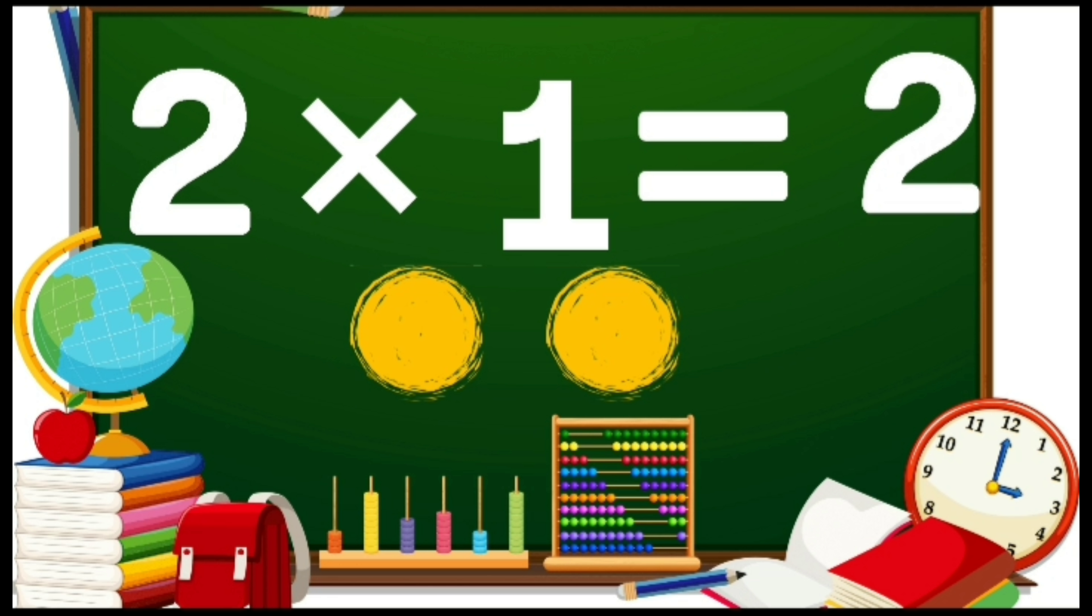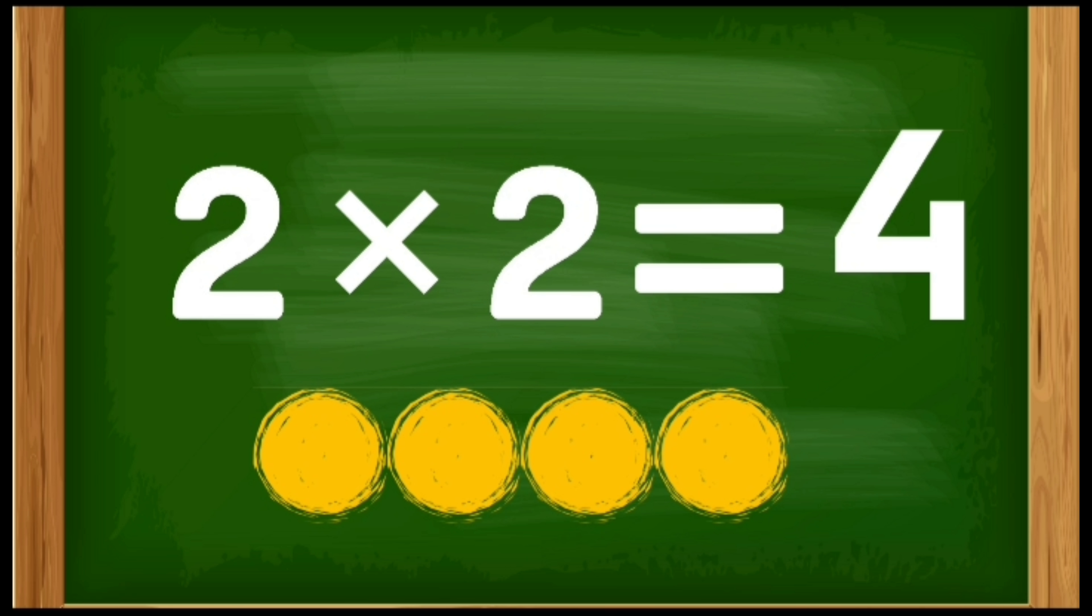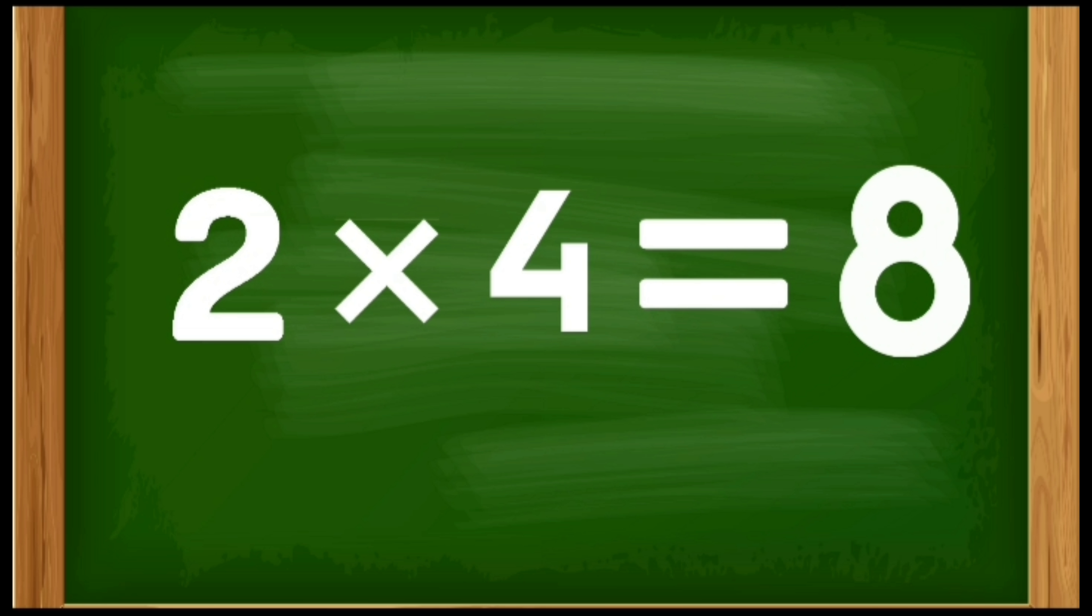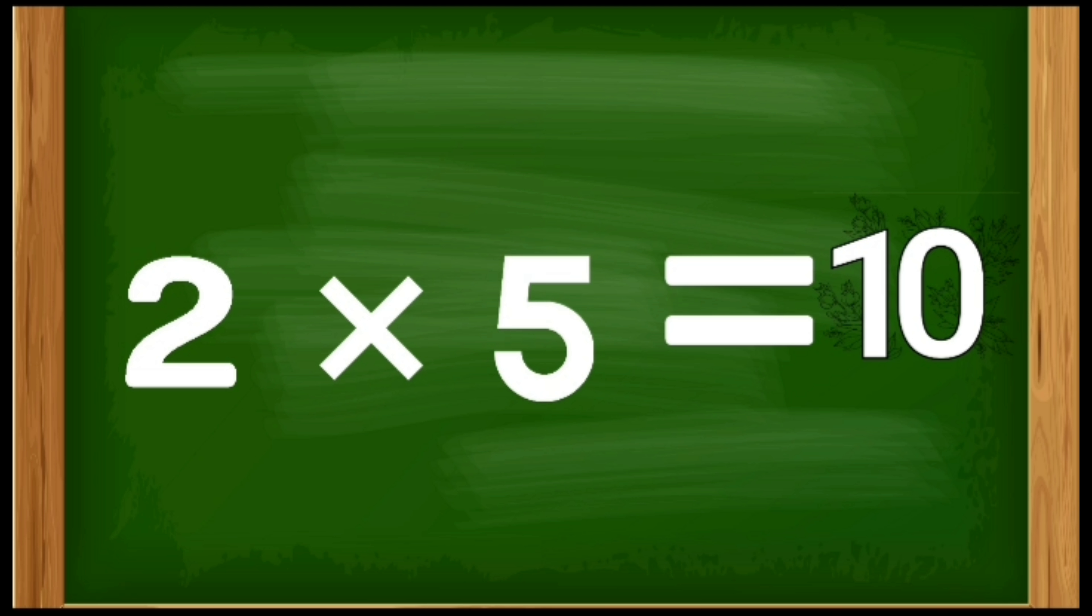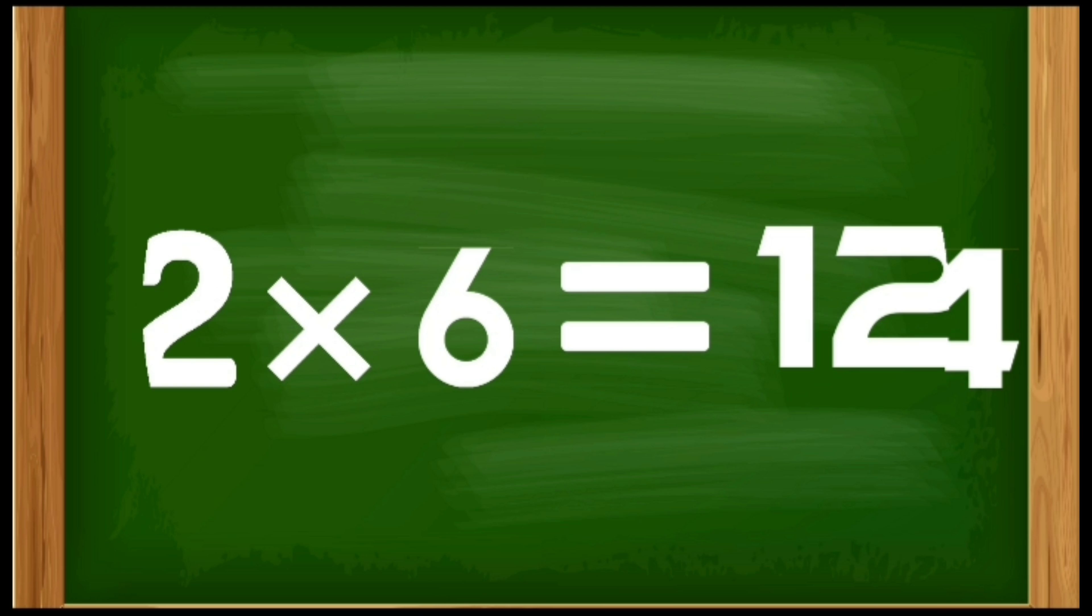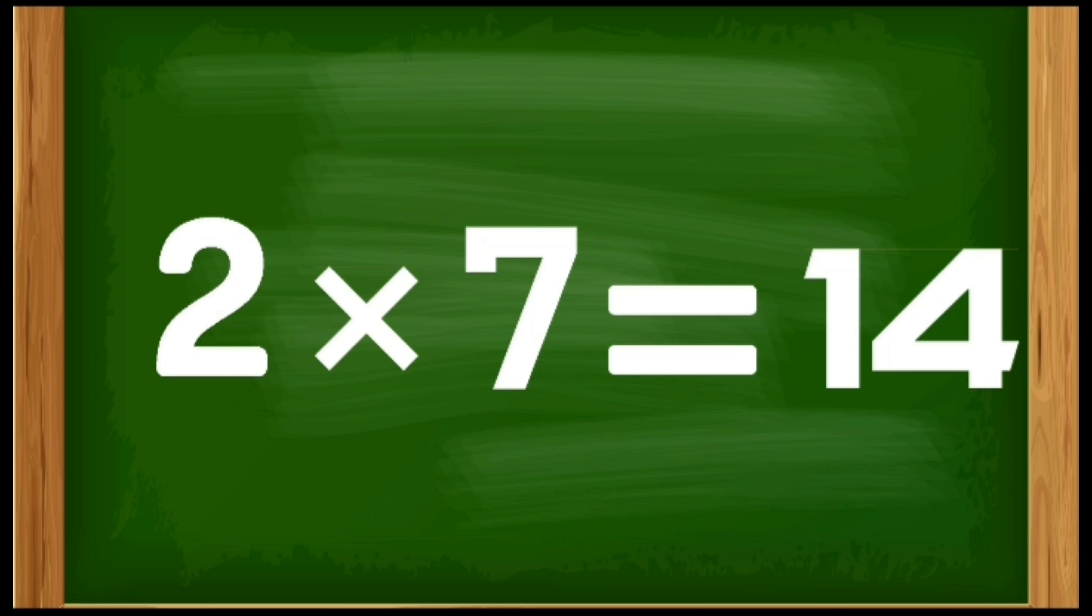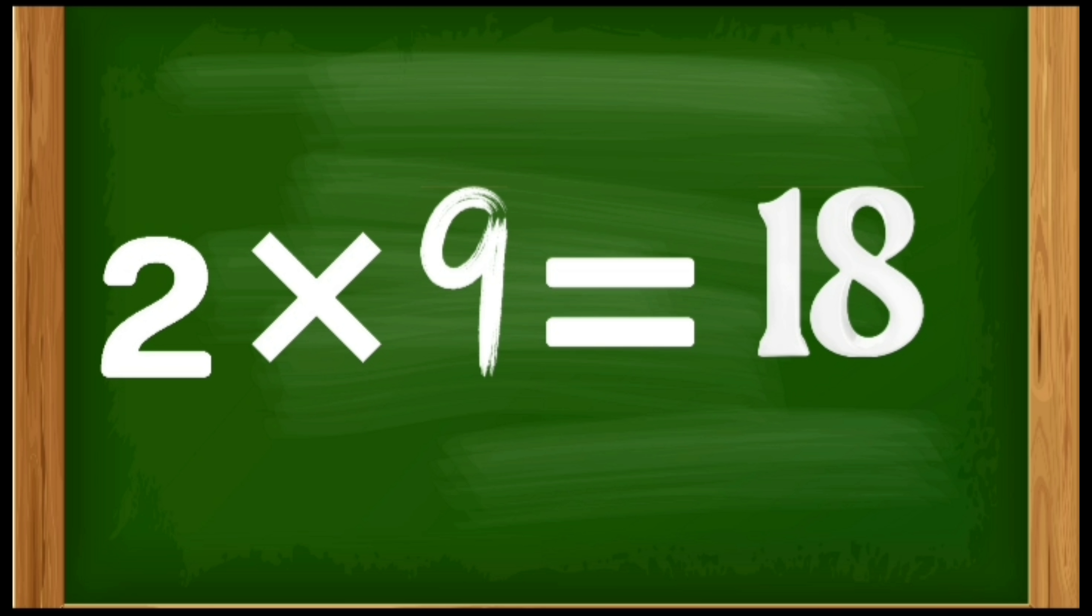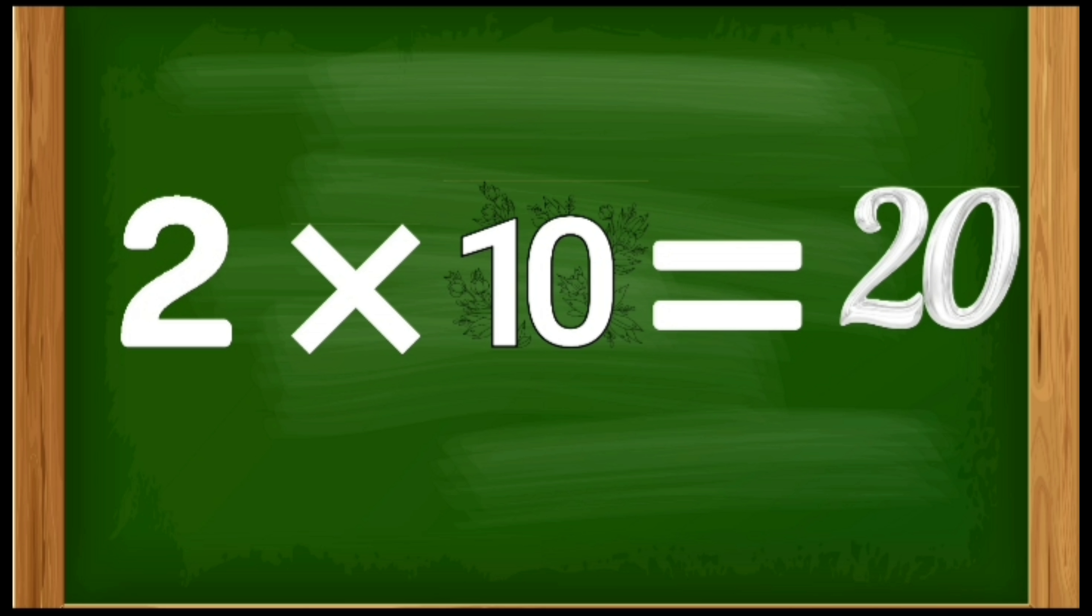Two ones are two. Two twos are four. Two threes are six. Two fours are eight. Two fives are ten. Two sixes are twelve. Two sevens are fourteen. Two eights are sixteen. Two nines are eighteen. Two tens are twenty.